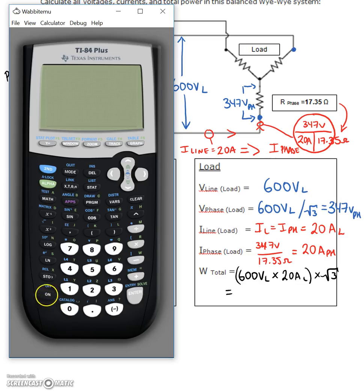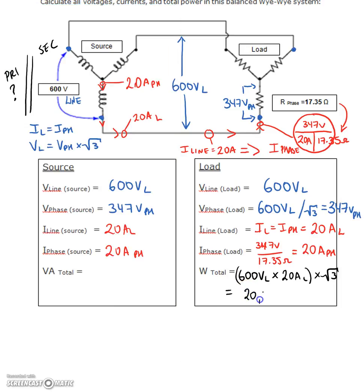So what do we've got? We've got 600 volts times 20 amps times the square root of three. That gives me 20,784.6 watts. I'm just going to put watts here because these are resistive loads.